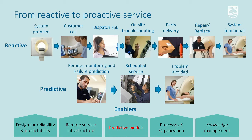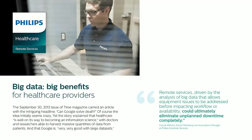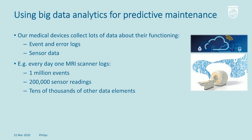This is a strategic intent of Philips — we aim for zero unplanned downtime. Our medical devices are already wired to collect lots of data about their functioning: events, error logs, sensor data. To give an idea of the size of data, one MRI scanner can log more than one million events per day, hundreds of thousands of sensor readings, and tens of thousands of other data elements. So this is truly big data. On the other hand, this data was not designed for predictive maintenance. These devices have been designed about 10 years ago, and not all components were designed with predictive maintenance or IoT in mind.